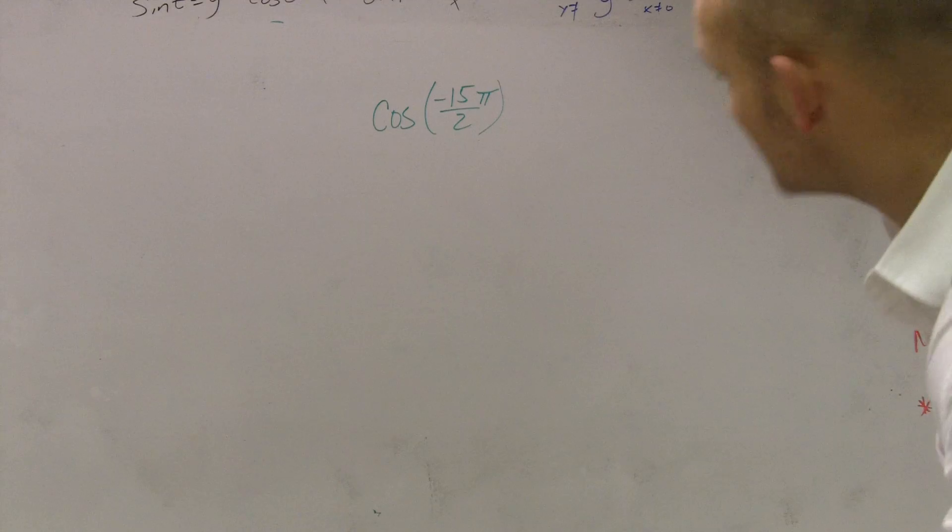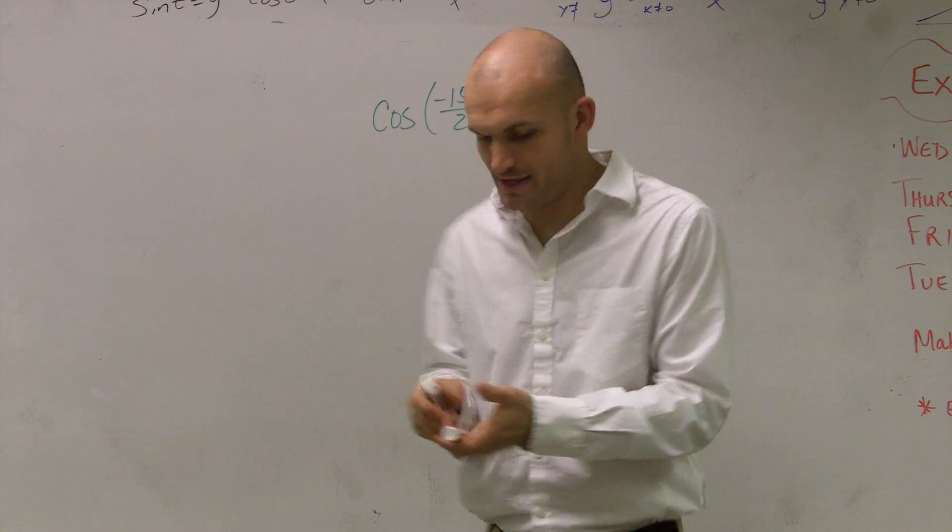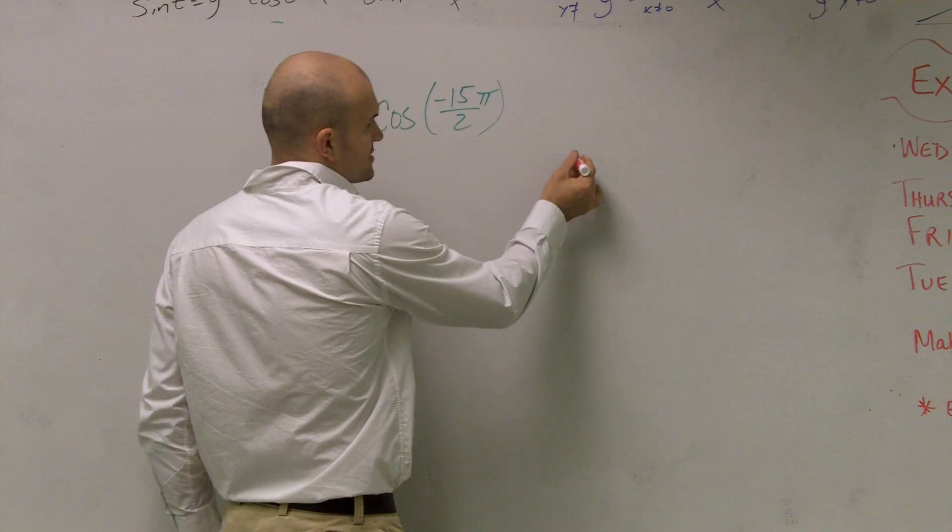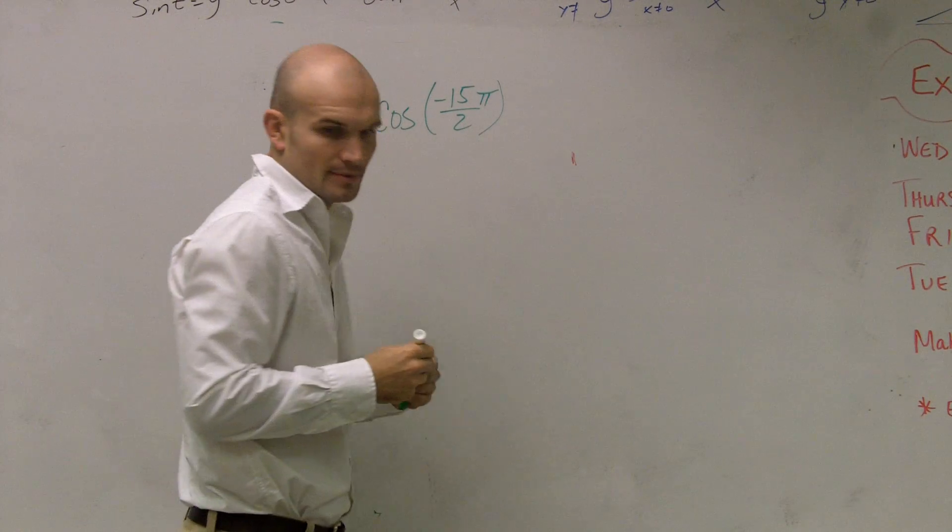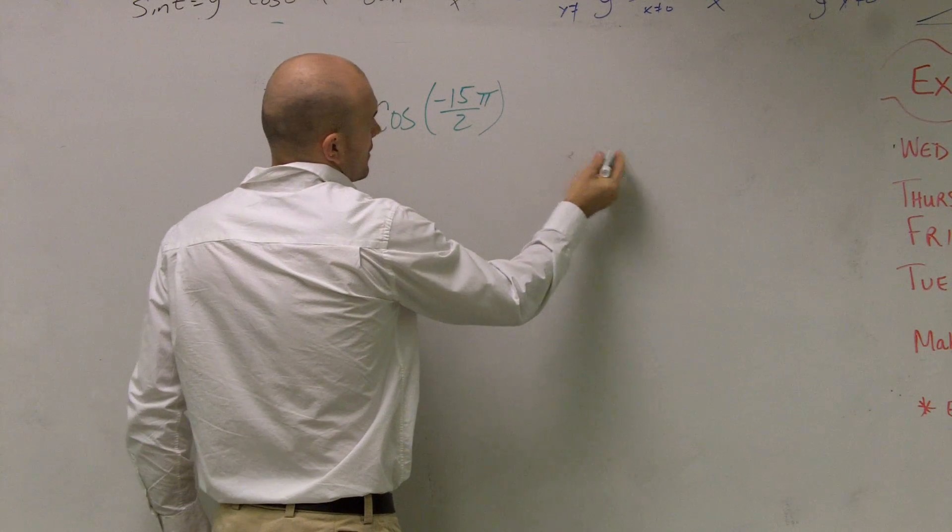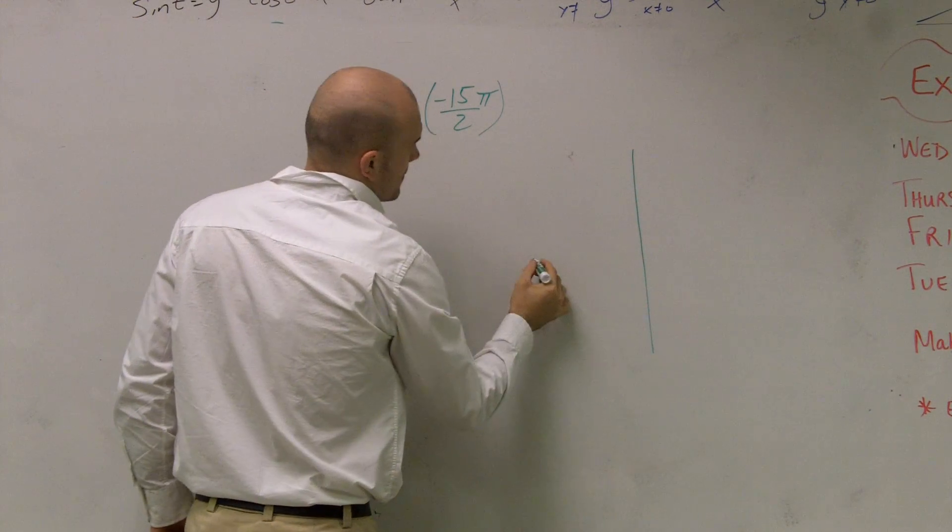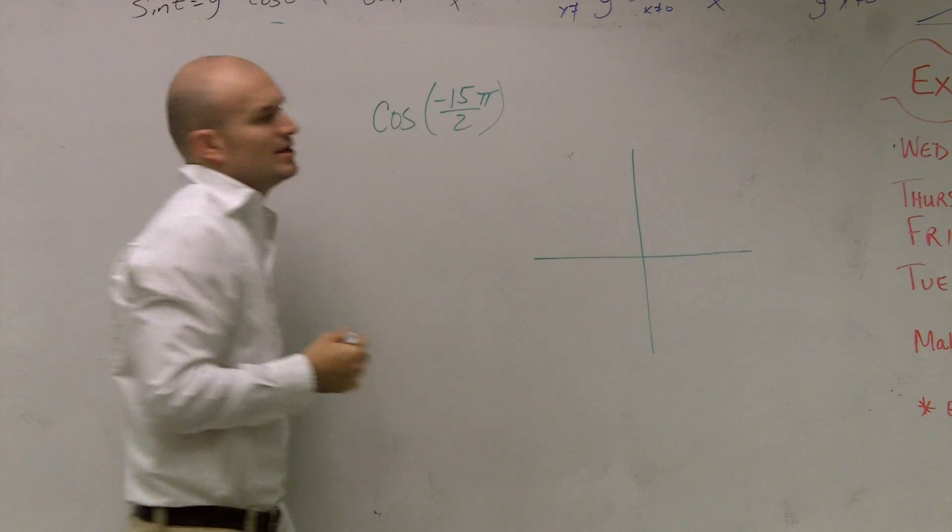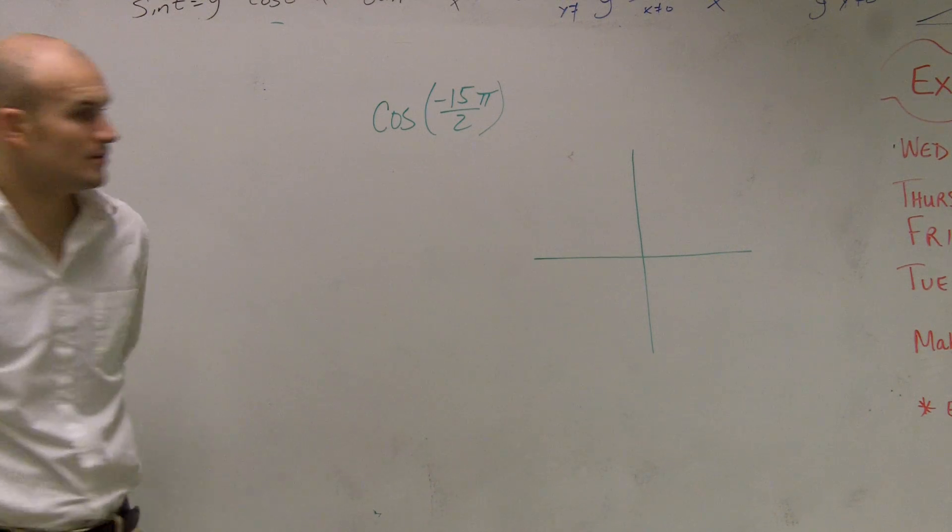To do a problem like this, what you want to make sure you have is, hopefully you'll see if this is in radians. Let's look at the unit circle. If I want to evaluate cosine of negative 15π over 2, a couple things.